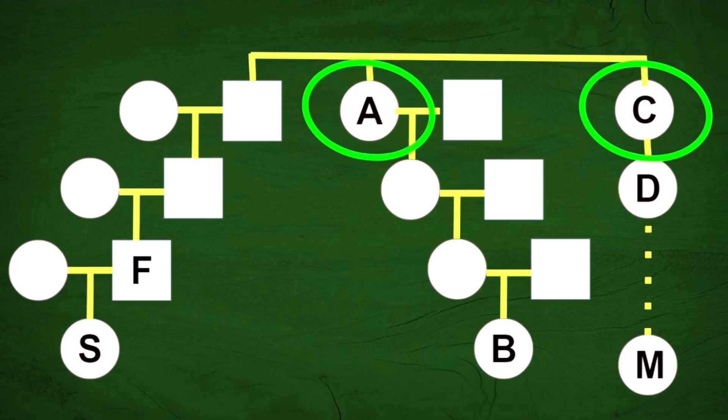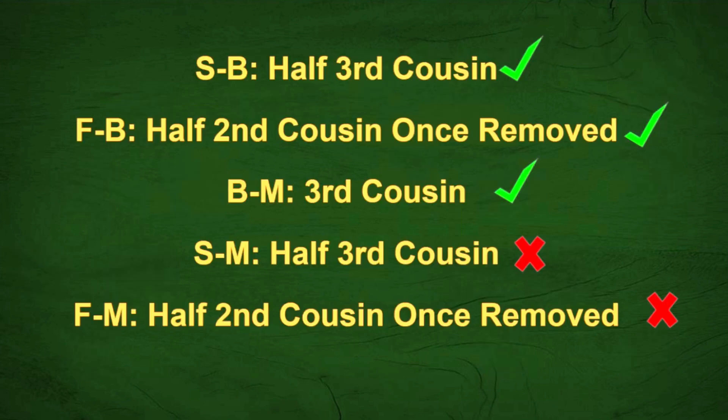Let's actually assume that A and C are half-siblings of S's great-grandfather. This also changes some things. S and B become half-third cousins — but remember, they do share DNA. F and B are half-second cousins once removed. B and M are third cousins. F and M are half-third cousins, and F and M are half-second cousins once removed. Again, the check marks and X's indicate who is sharing actual DNA, and all of these things are possible.